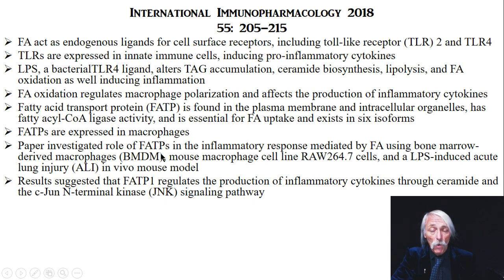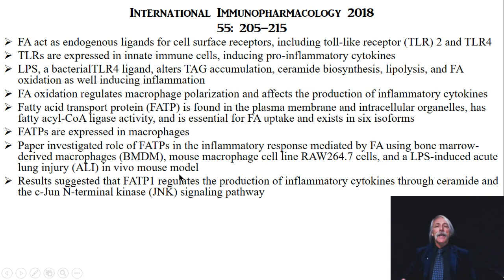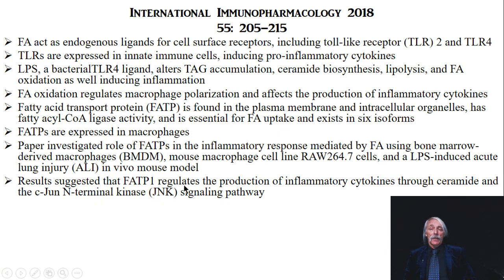Using bone marrow-derived macrophages (BMDMs) and the mouse macrophage cell line RAW 264.7, and looking at LPS-induced acute lung injury (ALI) in a mouse model, the results suggest that FATP1 regulates the production of inflammatory cytokines through ceramide and the c-Jun N-terminal kinase (JNK) signaling pathway.